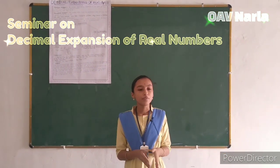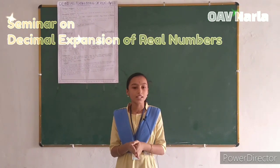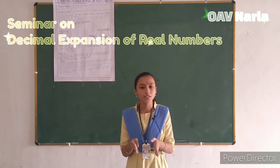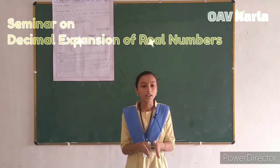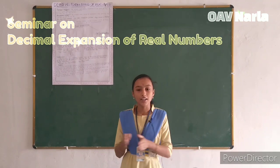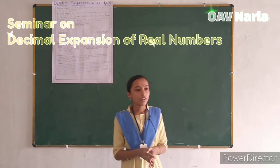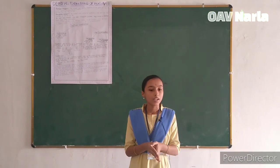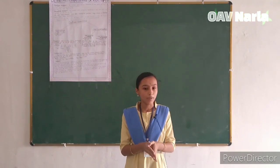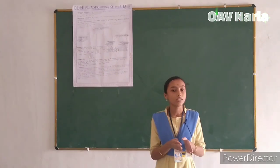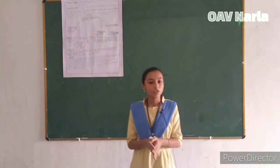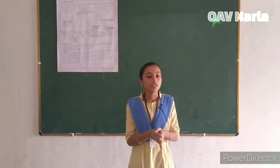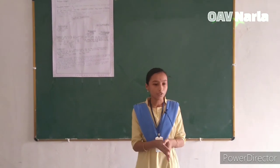So before going into the representation of the decimal expansions of real numbers, let us understand what rational and irrational numbers are. The numbers which can be expressed in the form of p by q are known as rational numbers, where p and q must be co-prime and q must not be equal to 0.